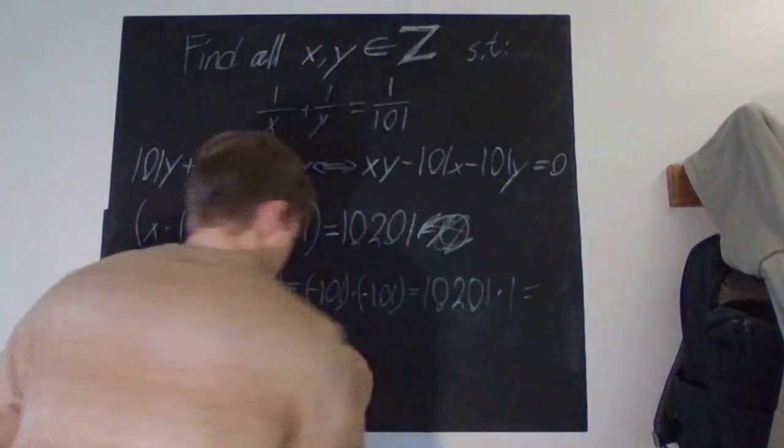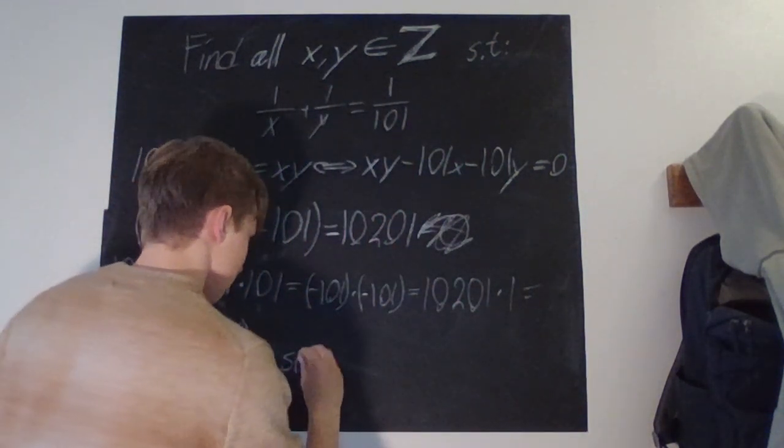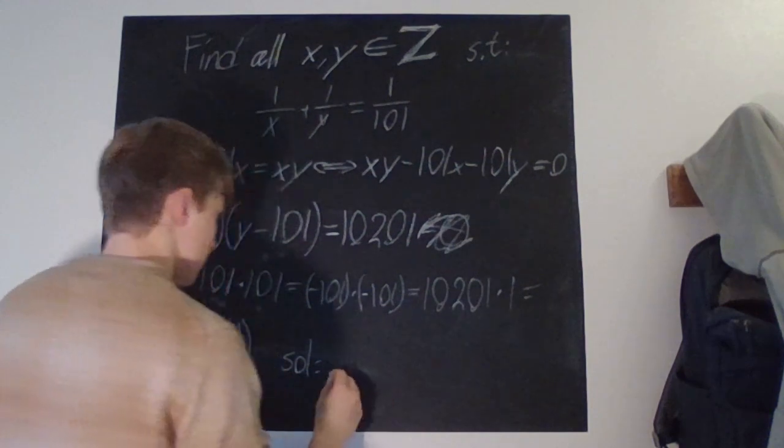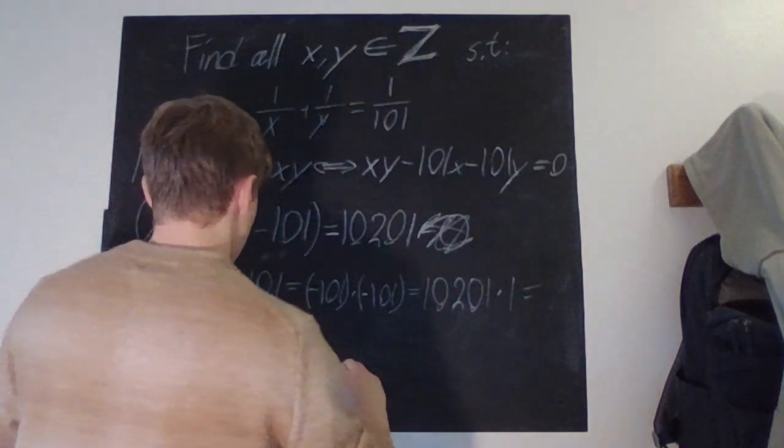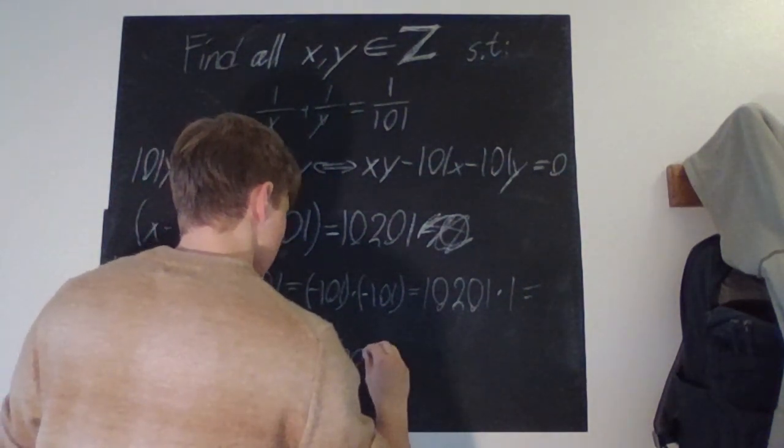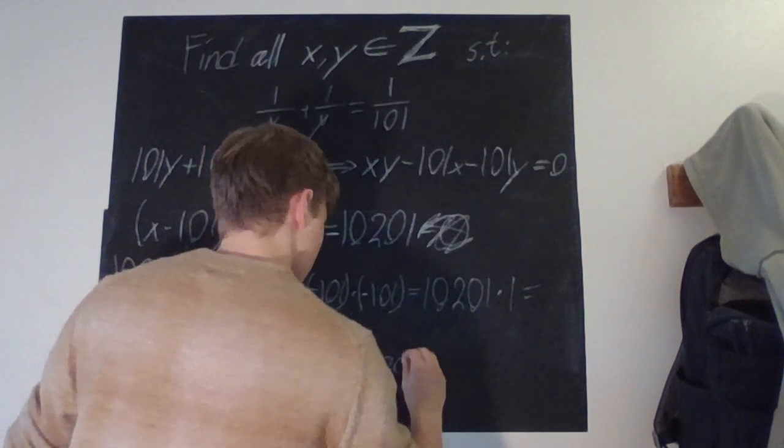So, we have solutions, we can just start writing them directly. Solutions, we have 202 and 202.